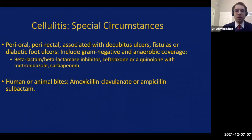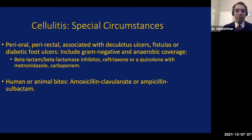There are certain special circumstances where the microbial flora is different and we need to target those. In particular, perioral and perirectal areas, cellulitis associated with decubitus ulcers, fistulas such as enteric fistulas, and diabetic foot ulcers should include gram-negative and anaerobic coverage. Options include beta-lactam/beta-lactamase inhibitor combinations, ceftriaxone or a quinolone with metronidazole, or a carbapenem. Another special circumstance is human or animal bites, where beta-lactam/beta-lactamase inhibitor combination is preferred.